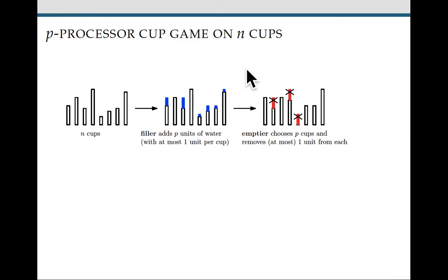Then the emptier is going to choose P cups and remove a unit of water from each of them. Here P equals three and I've crossed out the fill removed by the emptier.